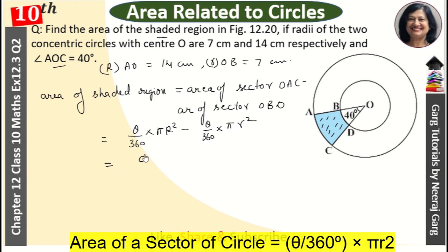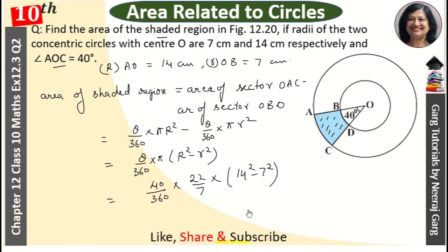And after this, put the values. Theta is 40 upon 360 into pi value 22 upon 7, and capital R is 14 square minus 7 square.